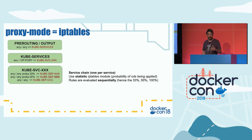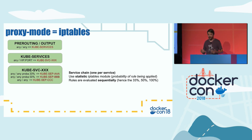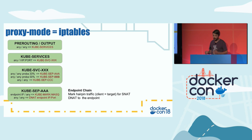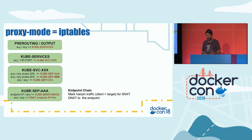When you hit the first rule there's a 33% chance to hit endpoint A. If you didn't hit that rule, you get to the second, which is 50% — because if the first rule wasn't hit, only two choices remain. The last rule is for the last endpoint and is always hit. The final endpoint chain does two things: most importantly it DNATs traffic to the actual pod IP and port.